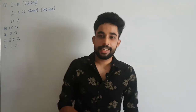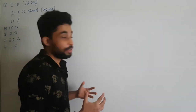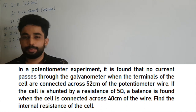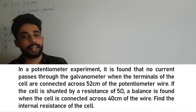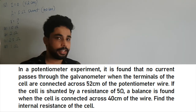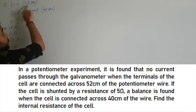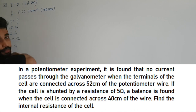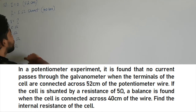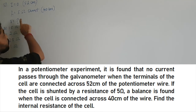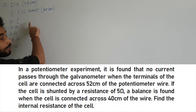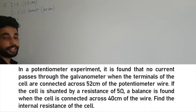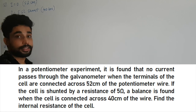Hey everyone, welcome back to Detangle. Let's do this question. Here we have a potentiometer experiment and a cell is connected. It is found that the current flowing is zero when the length is 52 centimeters. In the second case, they have taken a resistance of 5 ohm and shunted it across the cell.